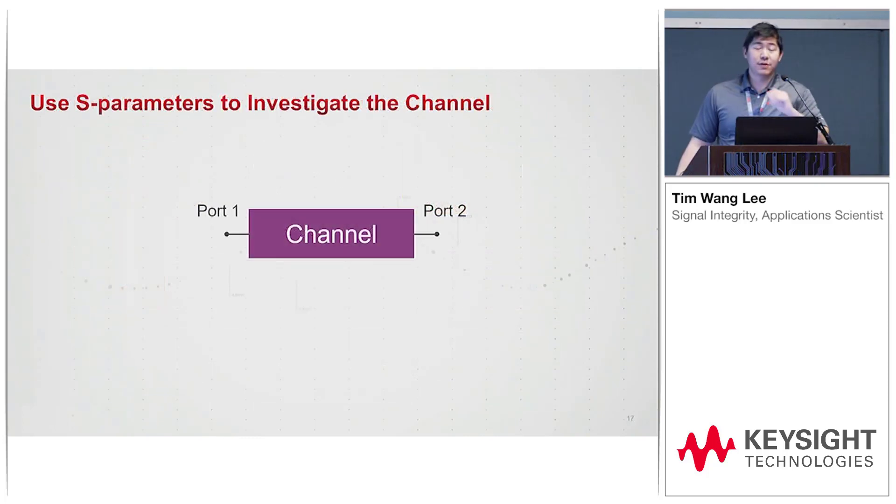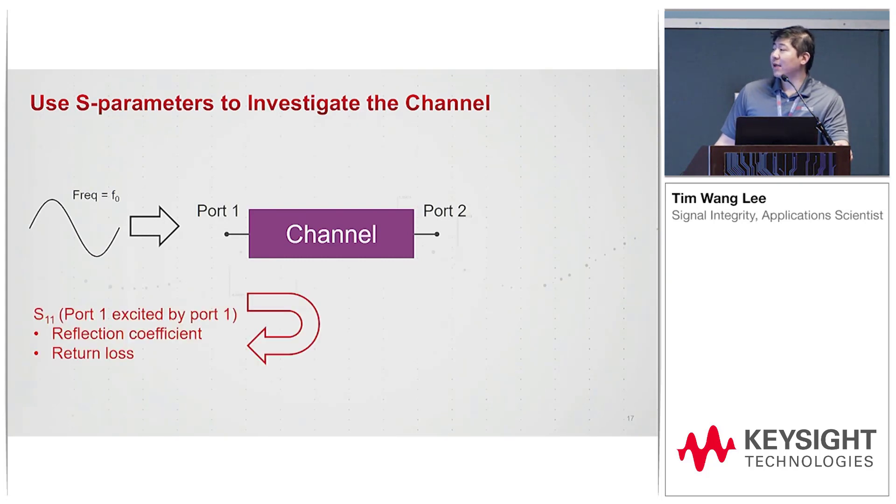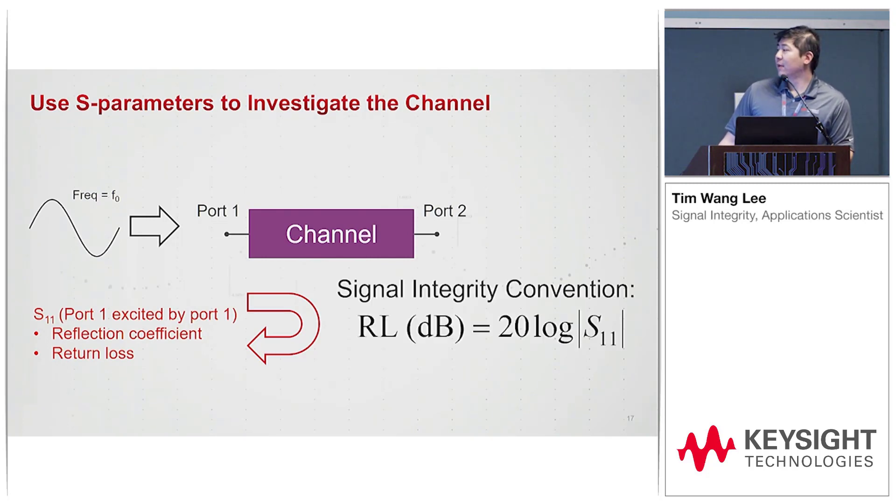A quick overview of S-parameters: if you have a channel, port one on the left, port two, at a certain frequency F-naught, we'll send in a sine wave. Whatever is coming back, that's S11. It's excited at port one, excited by port one, also known as reflection coefficient and the return loss.